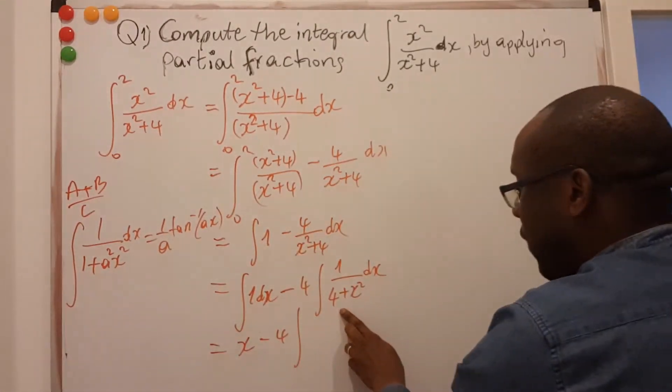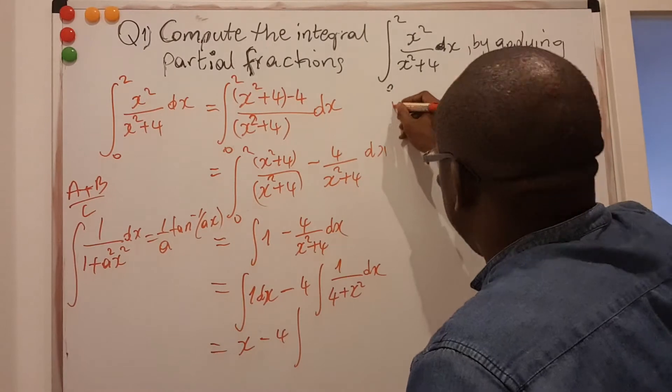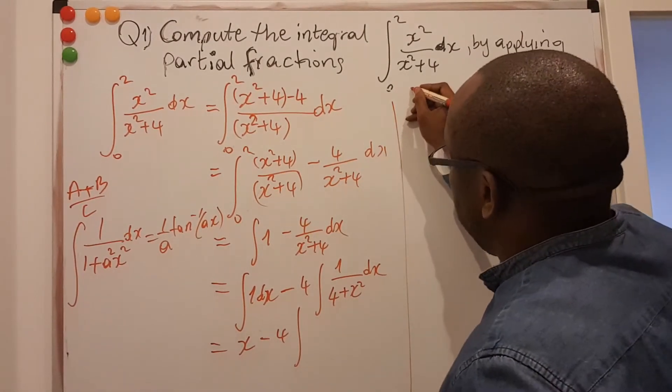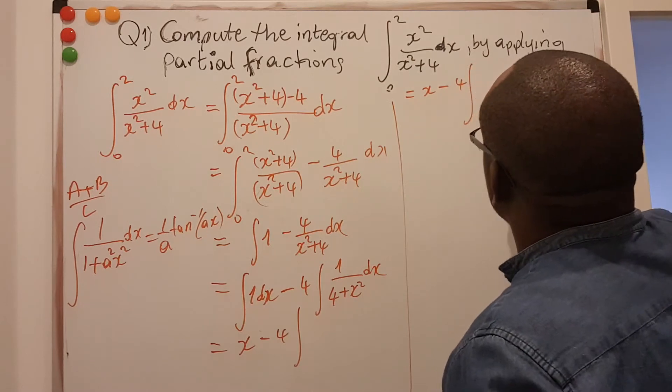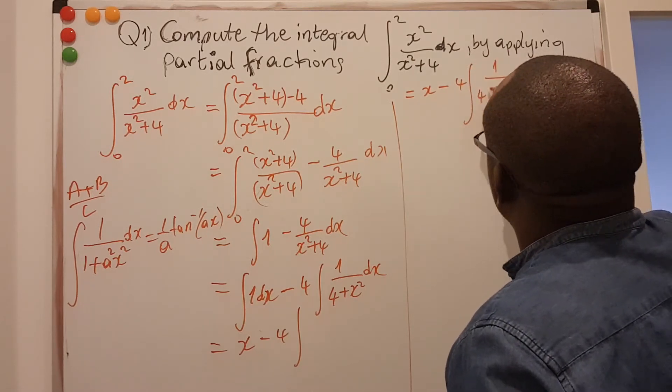So I have to play with this to look like that. I need a 1 here. This has a 4. So I can actually factorize that. So this is equal to x minus 4, the integral of 1 all over 4 outside.